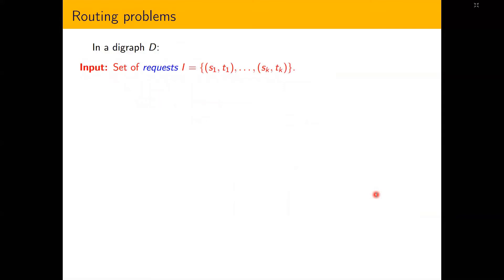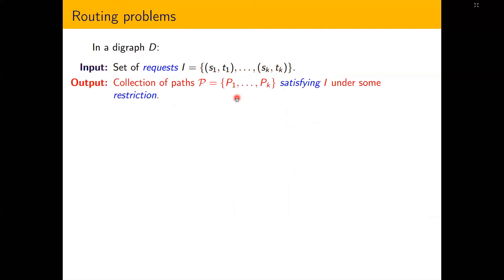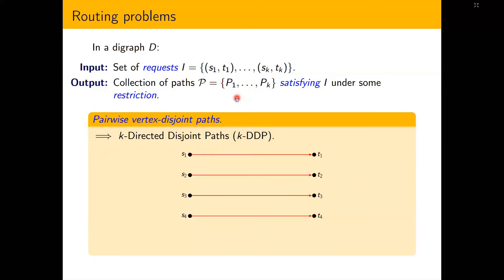Now about routing problems in digraphs. In a routing problem, we receive as input a set of requests (S1,T1), (S2,T2), ..., (Sk,Tk), and the goal is to output a collection of paths P1, P2, ..., Pk satisfying the requests, where each Pi is a path from Si to Ti in the digraph D. For example, if we ask for all pairs to be pairwise vertex disjoint, this is exactly the classical k-directed disjoint path problem, which is a notoriously hard problem in digraphs.